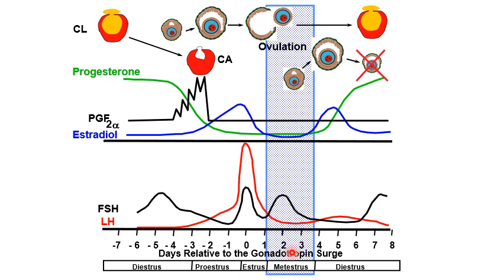The next stage is metestrus — after estrus behavior and before the corpus luteum is fully functional. After ovulation, which usually occurs during estrus, the regressed follicle becomes the corpus haemorrhagicum and later the corpus luteum. At this point, progesterone (P4) is still low because the CL has not yet fully formed.